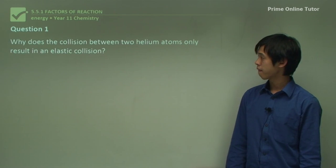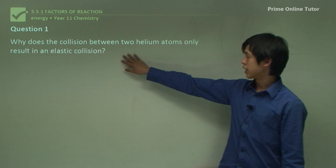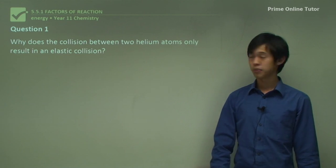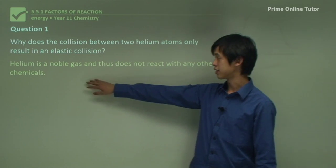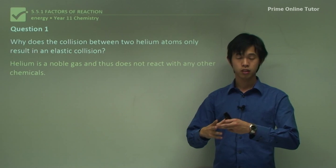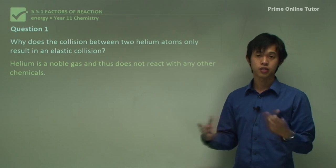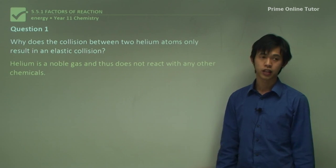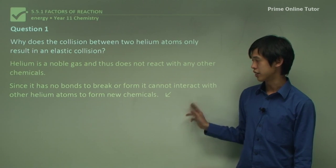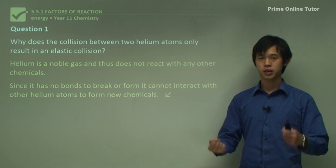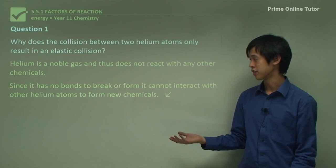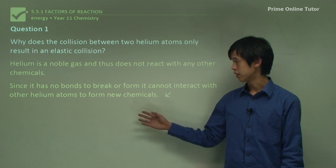Question one: why does the collision between two helium atoms only result in an elastic collision? Well, helium is a noble gas — it's group eight and does not react with any other chemicals because it's stable. It has a full outer shell of electrons, so it doesn't need to react with anything. Since it has no bonds to break or form, it cannot interact with other helium atoms to form new chemicals. It just hits and bounces off.